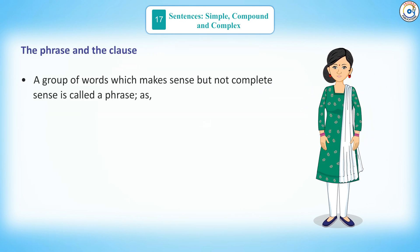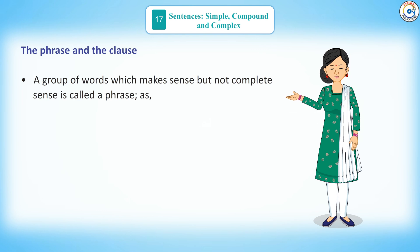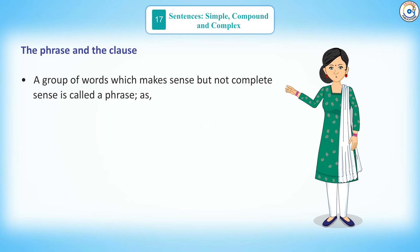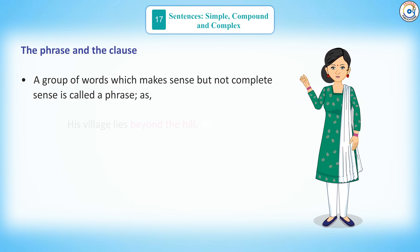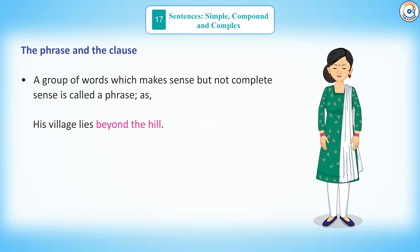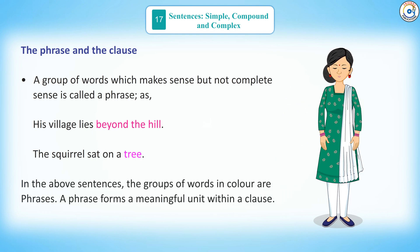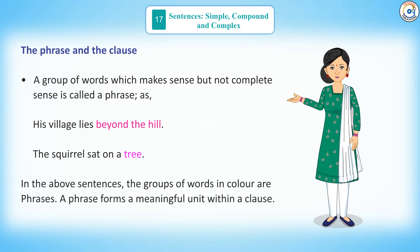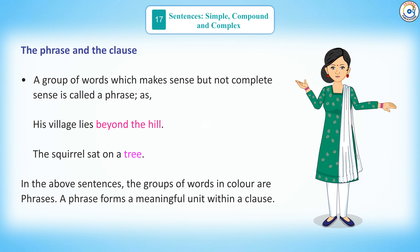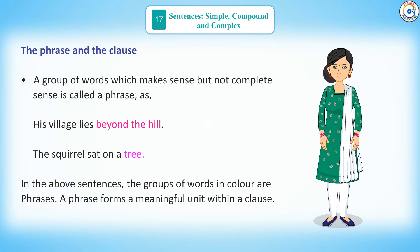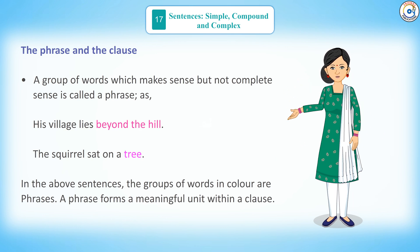A group of words which makes sense but not complete sense is called a phrase, as in: 'His village lies beyond the hill' and 'The squirrel sat on a tree.' In the above sentences, the groups of words in colour are phrases. A phrase forms a meaningful unit within a clause.